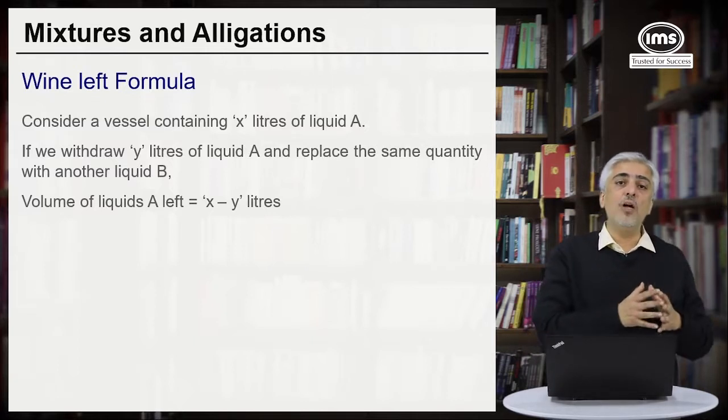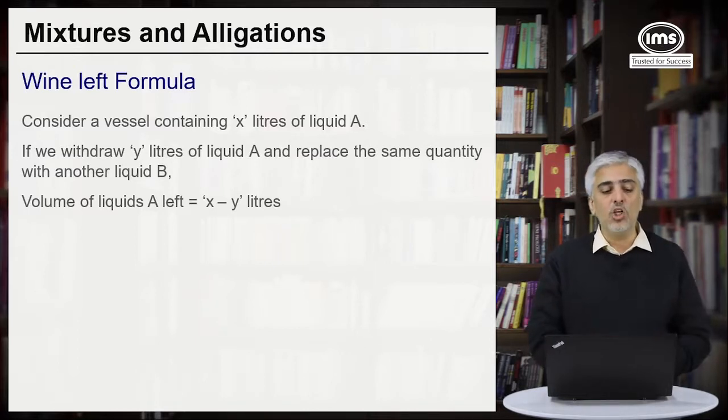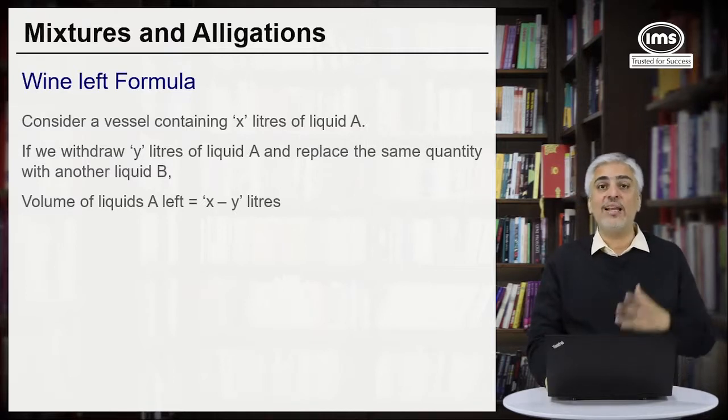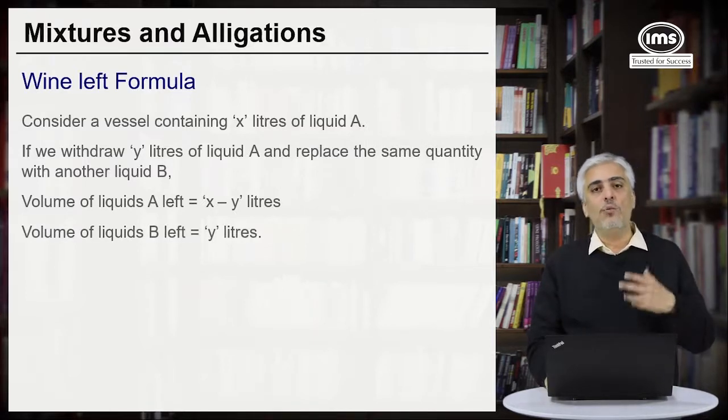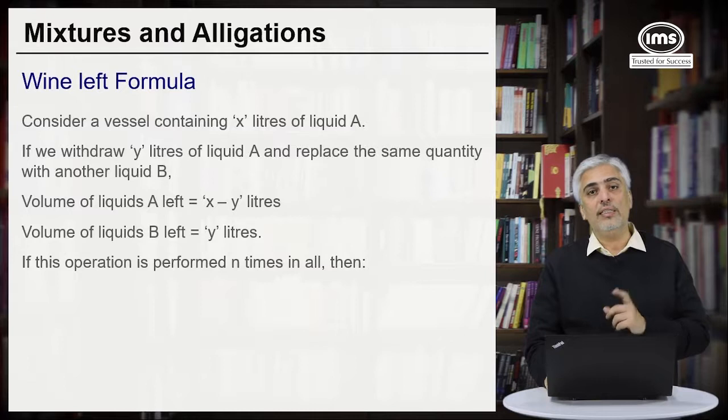So what happens is every time somebody withdraws y liters and replaces it with water, how much would be the wine left after n transactions? So volume of liquid A left would be in the first case x minus y liters, while volume of liquid B would be y liters. If this operation is performed n times in all, then what is the property?